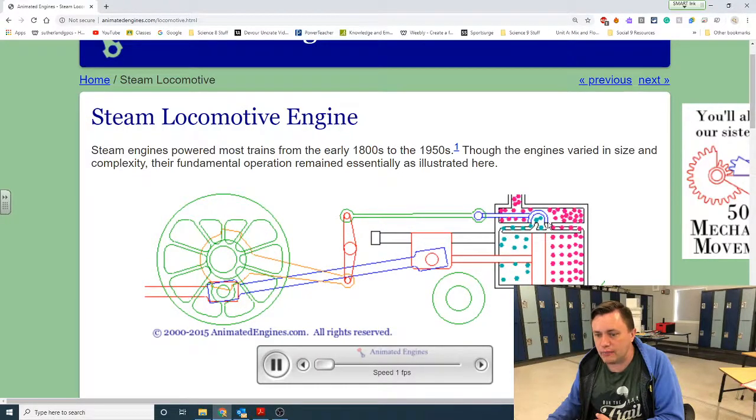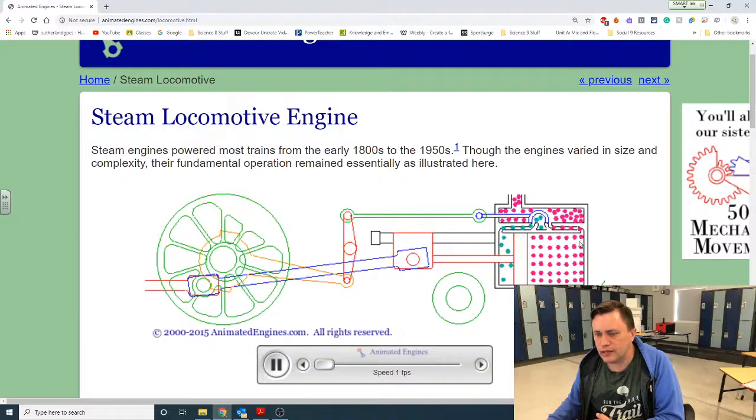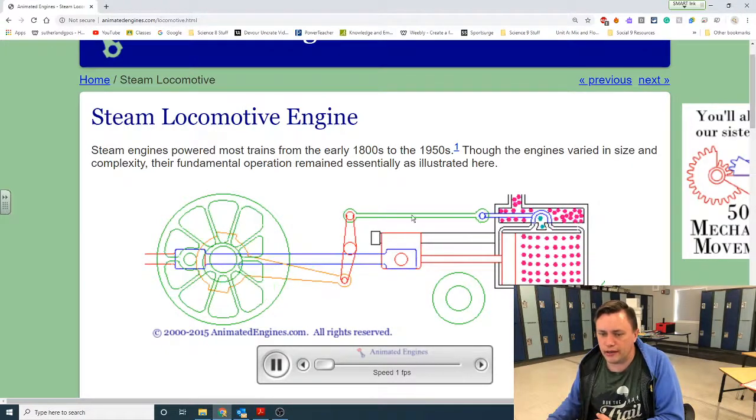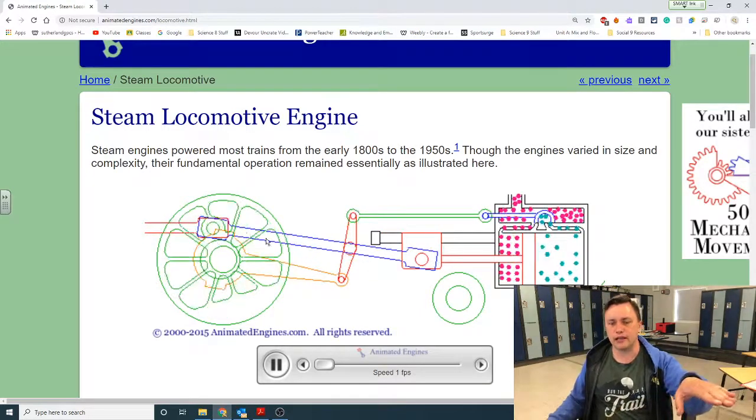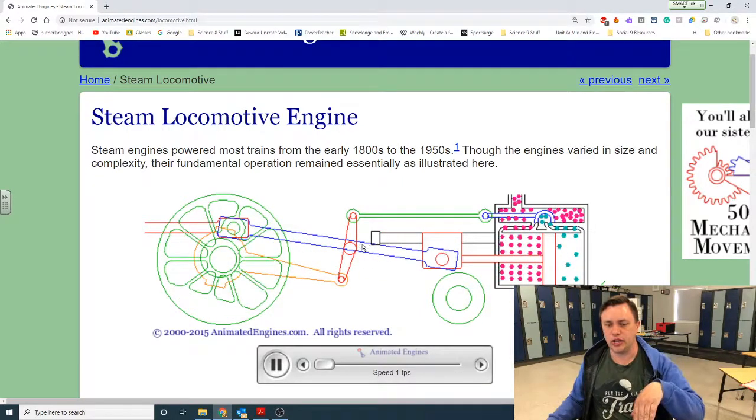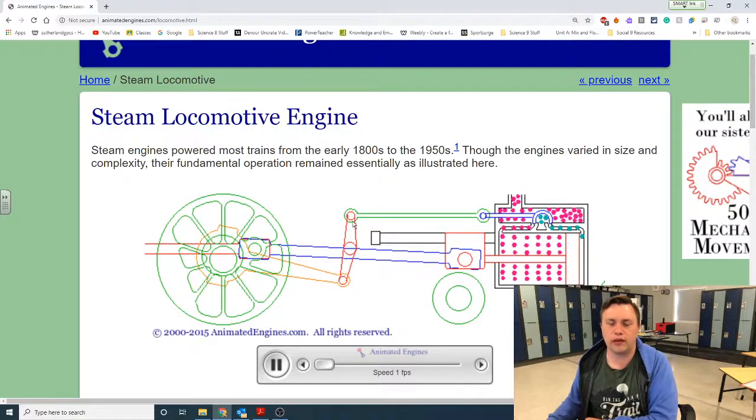As this piece right here is moving back and forth, it allows the cold air to escape. When it allows cold air to escape, it allows the hot steam to come in and push it back. When it's pushed all the way to the backside, it changes this camshaft.